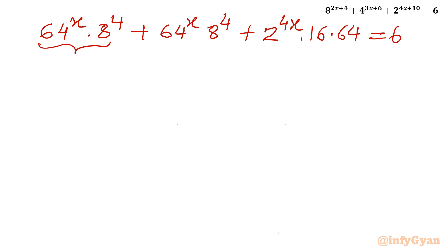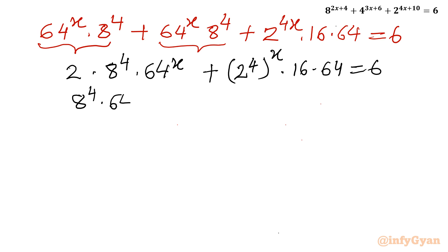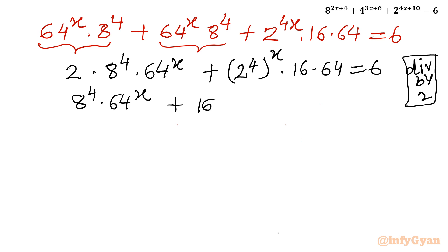The first two terms are identical, so x + x = 2x gives us 2 × 64^x × 8^4. Then we have (2^4)^x × 16 × 64 = 6. The equation is divisible by 2, so dividing through: 8^4 × 64^x + 8 × 64 × 16^x = 3.